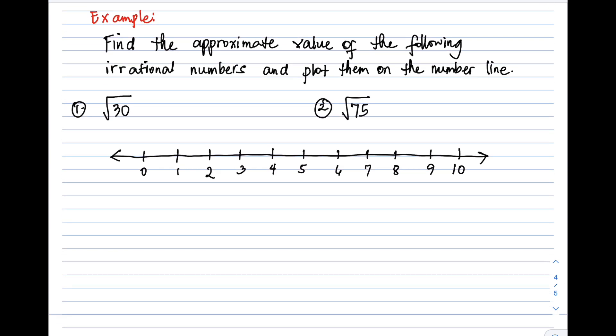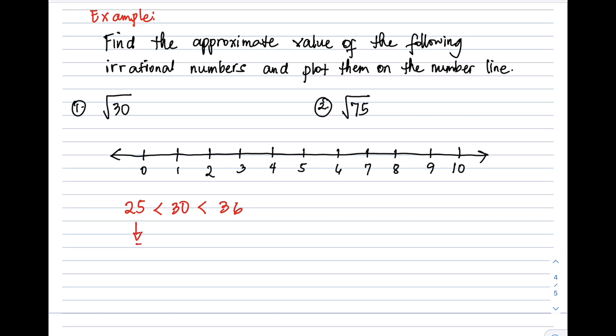Find the approximate value of the following irrational numbers and plot them on the number line. Number 1, we have square root of 30. Our first step is to find the two nearest perfect square numbers close to 30, which are 25 and 36. So you'll have an idea that square root of 30 is between 5 and 6.